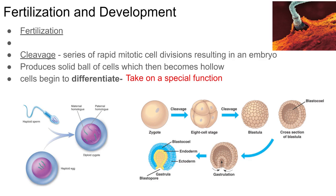Today we're going to talk about the process of fertilization, development, and birth. We talked about the reproductive cycle that happens in women, and we know that part of that process involves an egg being released from the ovary — the term for that is ovulation. An egg inside the ovary matures, is released, and possibly fertilized.